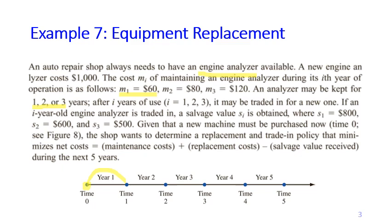If you trade an engine analyzer machine, you obtain a salvage value which depends on how many years you have used the machine. So an i-year-old engine analyzer has salvage value S_i. For example, S1 equals $800 — suppose you have a new machine at time zero, you use it for one year, and then trade it; you will get $800 as the salvage value because the machine is one year old.